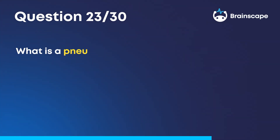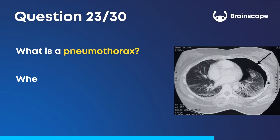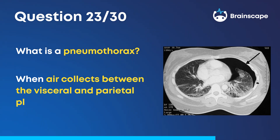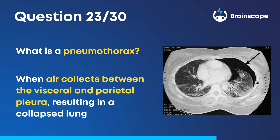Question 23. What is a pneumothorax? When air collects between the visceral and parietal pleura, resulting in a collapsed lung.